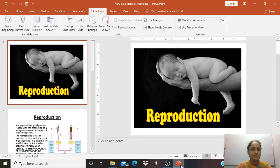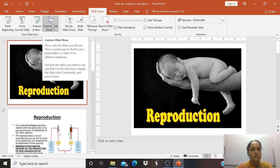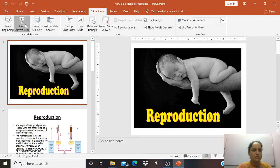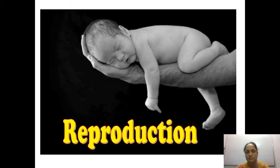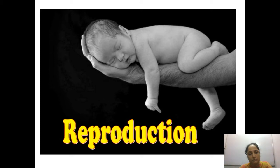Hello everyone, today I am going to start a new chapter — how do organisms reproduce. Before this, we studied the topic 'Life Processes.' In that chapter, to consider whether an organism is living or non-living, there are a few processes we focus on, like breathing, respiration, digestion, and excretion.